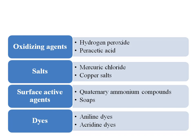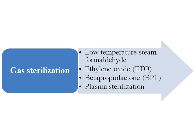Surface active agents, which reduce surface tension, are the quaternary ammonium compounds and soaps. Dyes like aniline and acridine dyes are used for disinfection. There are also gaseous sterilization methods like low-temperature steam formaldehyde, ethylene oxide, beta-propiolactone, and plasma sterilization.